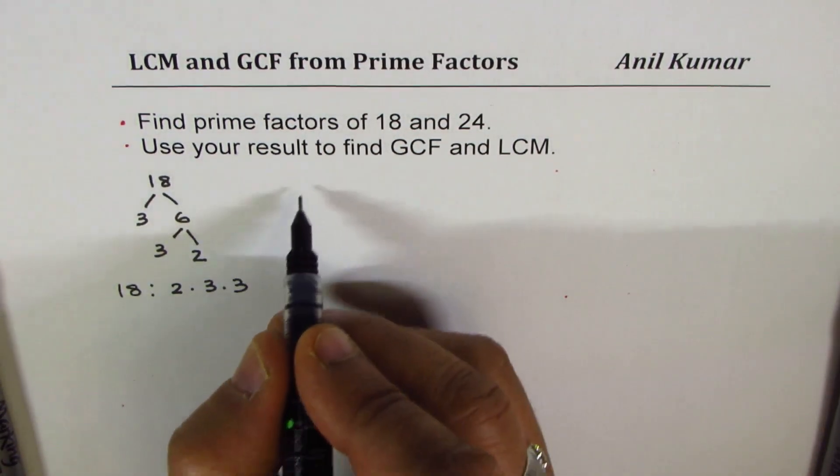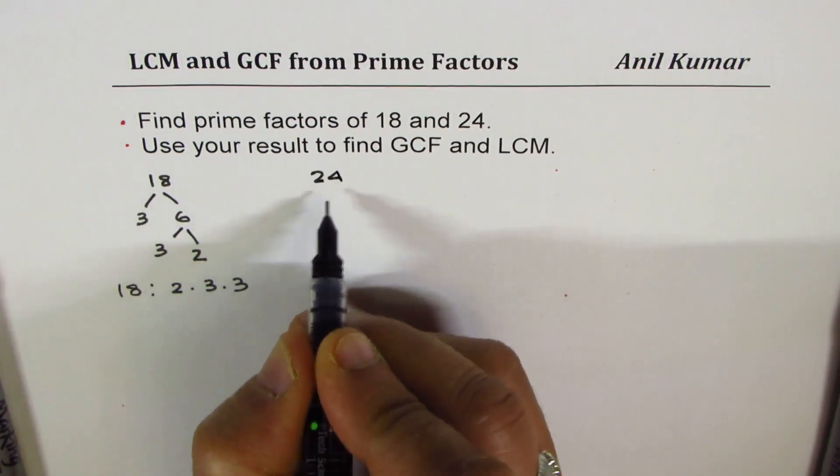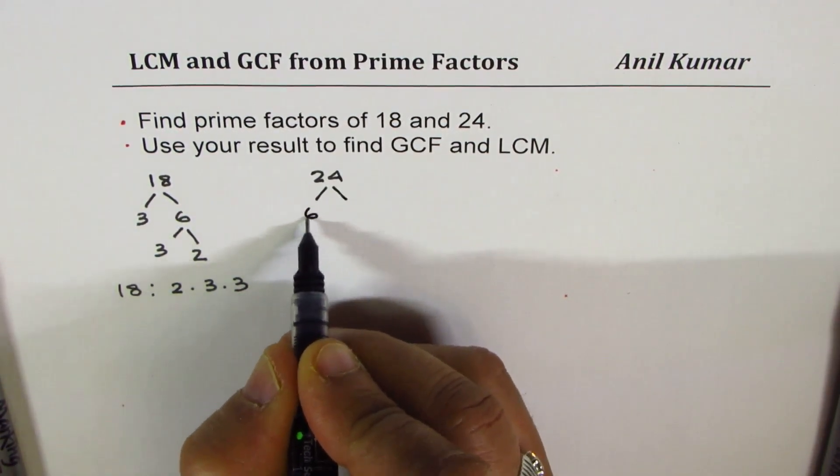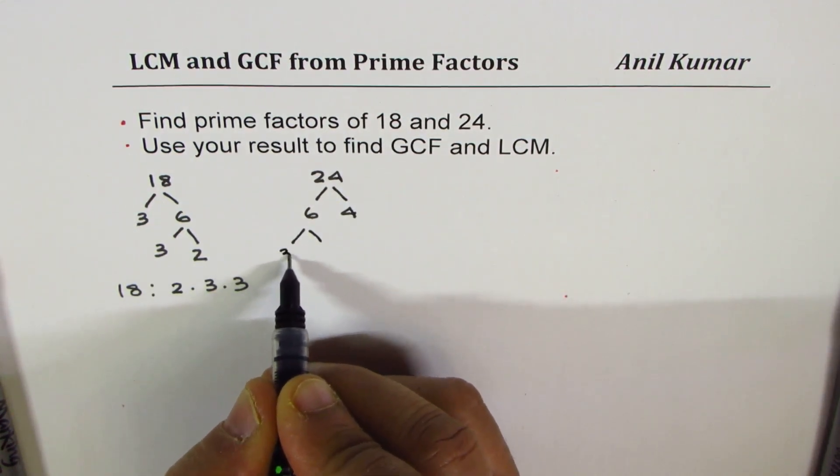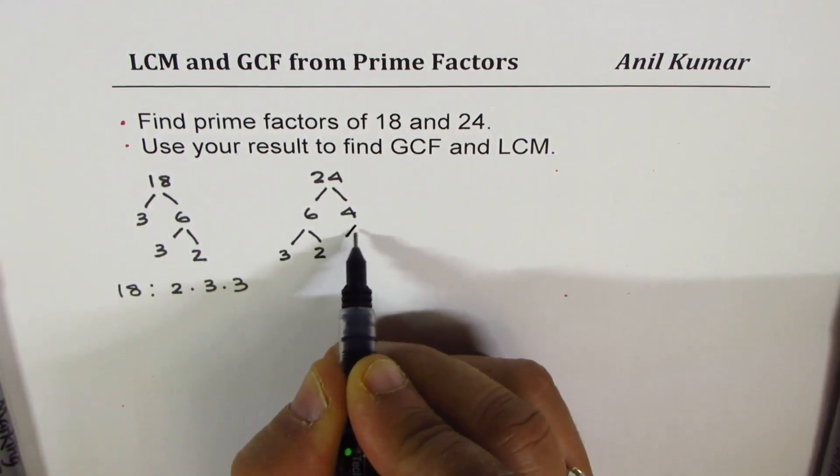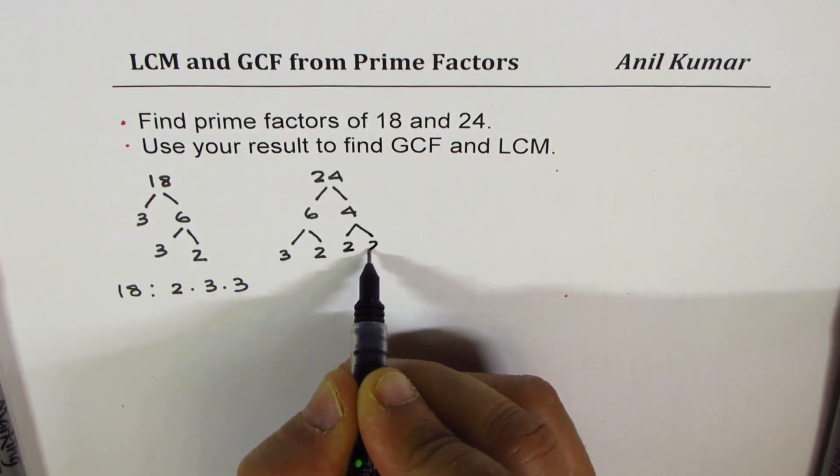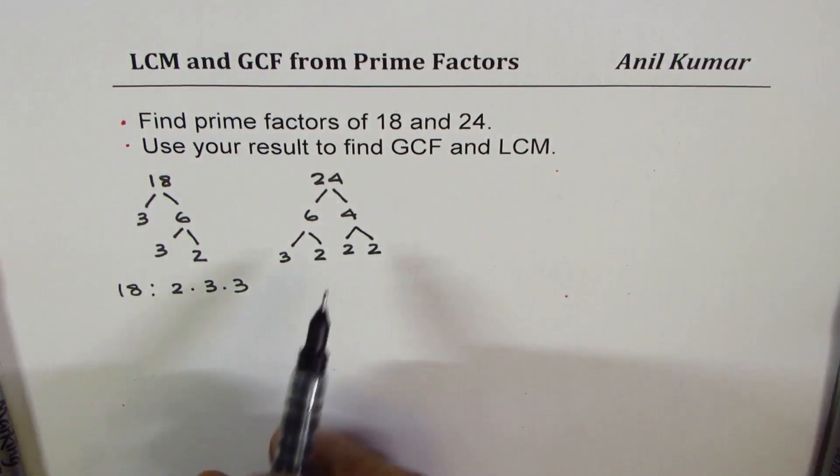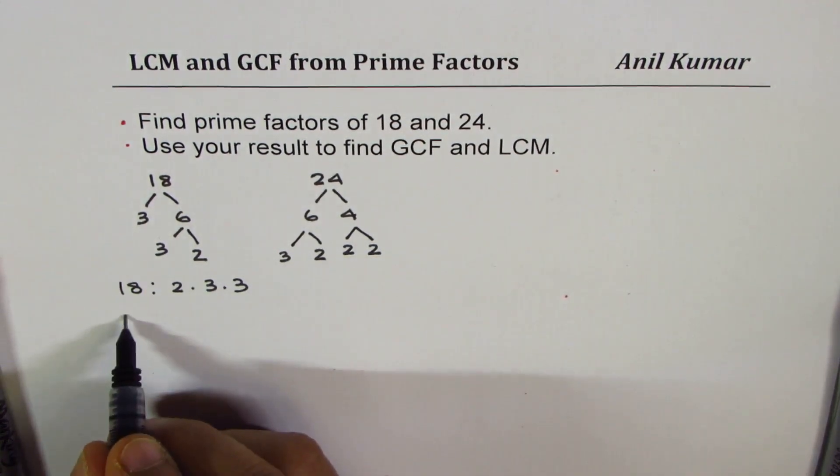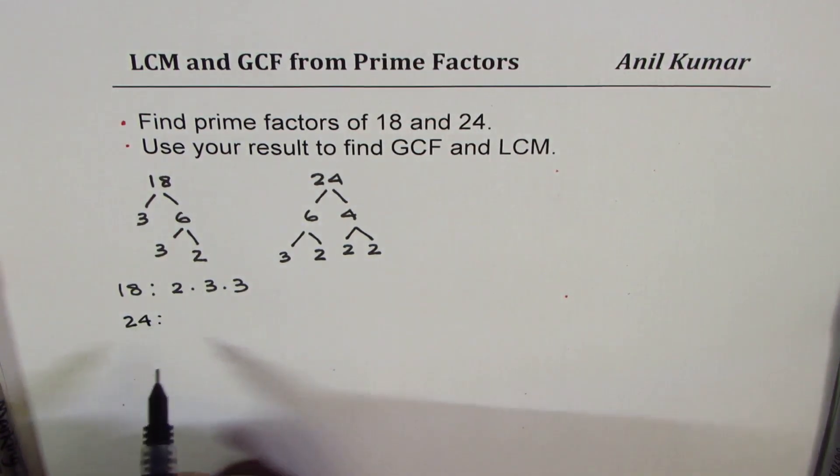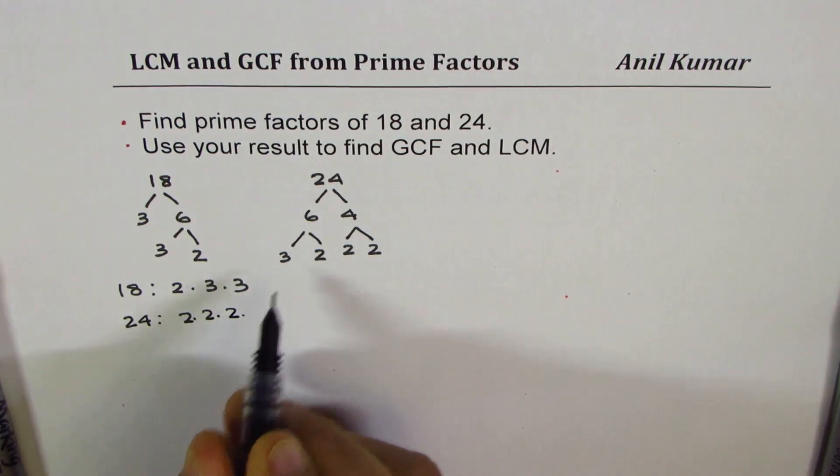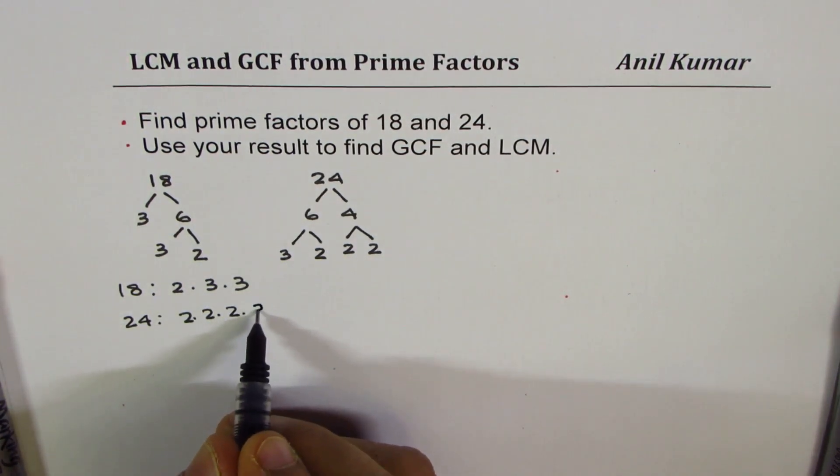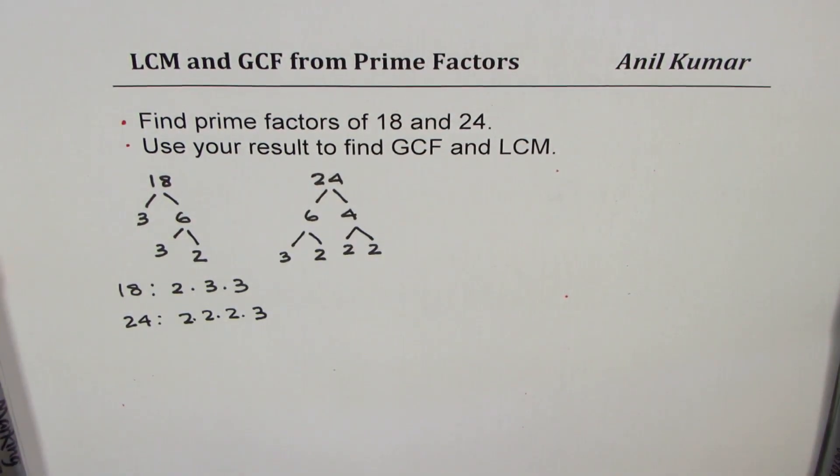Let's do the same thing for 24. 24, you know, as 6 times 4. For example, 6 could be written as 3 times 2 and 4 is 2 times 2. So in terms of prime numbers, 24 can be written as product of 2, 2, 2, that is 8 times 3, 24. Now these are the prime factors.